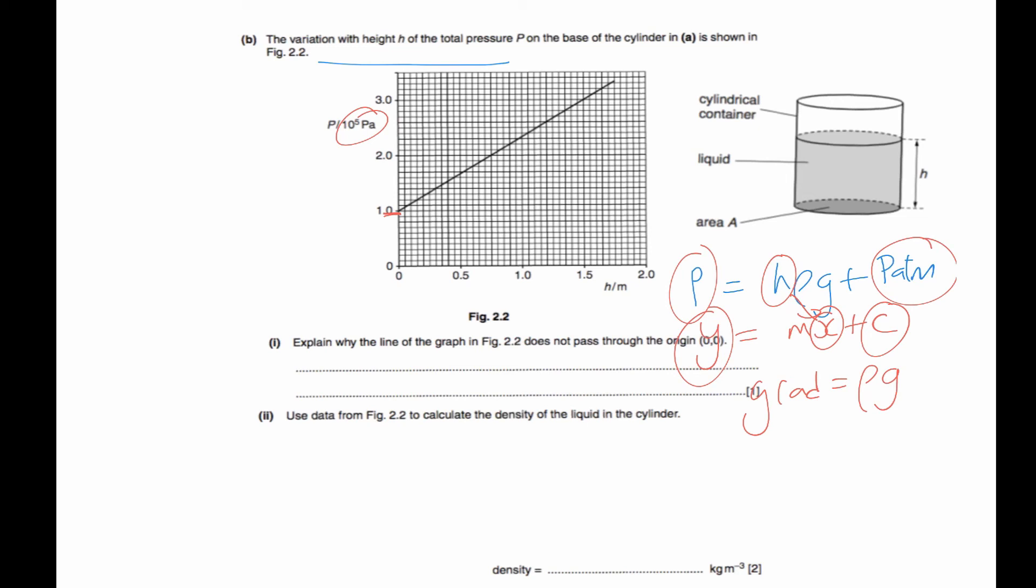So anyway, to find the density, find the gradient. Now this time you have no choice but to take two points. So you might want to take, of course, this initial point because the h is 0, and then you want to find another point which actually passes through a nice reading that you can read. So this will be 1.65 meters. So this coordinate will be 1.65 and the pressure would be 3.2, but don't forget there's a times 10 to the power of 5.